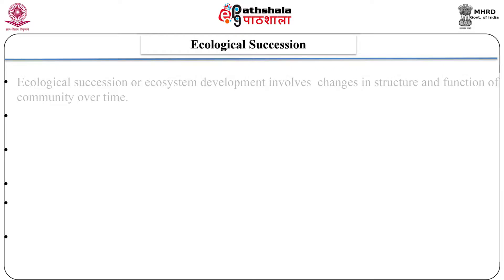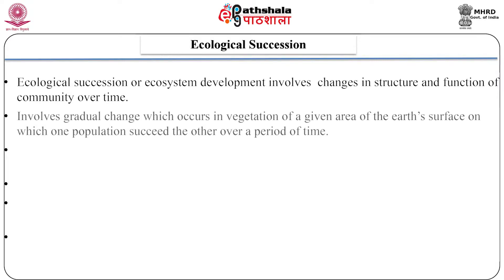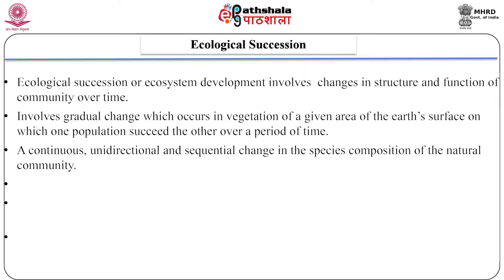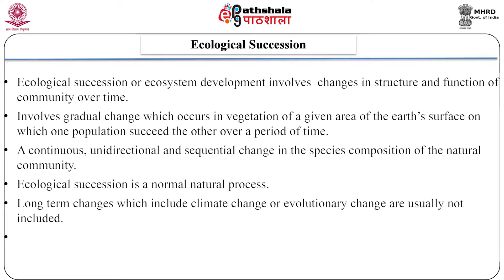Introduction to succession: Ecological succession or ecosystem development involves the changes in the structure and function of a community over time. Succession may also be described as the gradual change which occurs in vegetation of a single area of the earth's surface, on which one population succeeds the other over a period of time. It can also be defined as a continuous, unidirectional and sequential change in the species composition of the natural community. Ecological succession is a normal natural process. Long-term changes of millions of years, which include climate change or evolutionary change, are usually not included in the definition of succession.